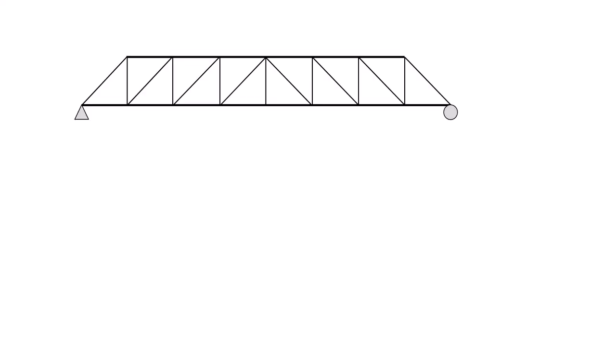Let's consider a simply supported truss with a load applied vertically downward at the center. Because of the load, the bottom horizontal member and vertical members colored in blue will be in tension, and the top chord and the diagonal members colored in orange will be in compression.